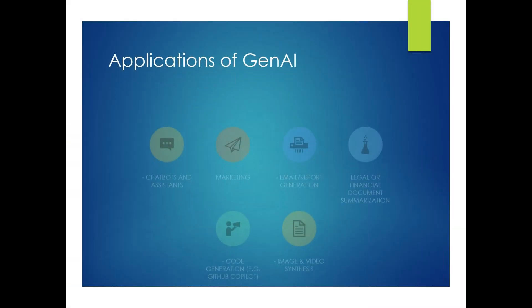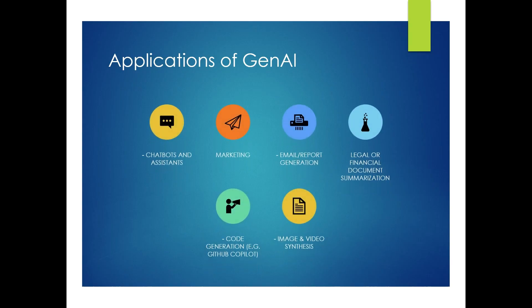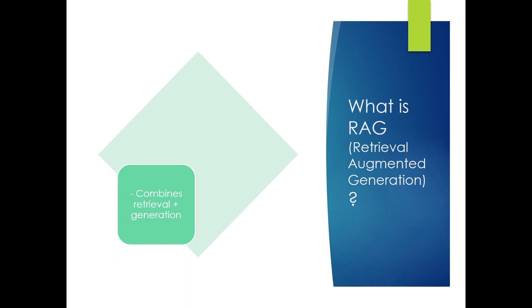The next question: what are applications of generative AI? Generative AI is transforming industries. It is used in chatbots and digital assistants, marketing content creation, report and email generation, legal or financial document summarization, image and video generation, and code completion with tools like GitHub Copilot.